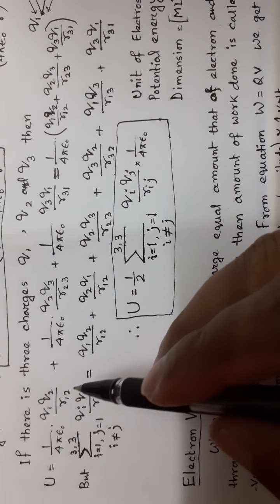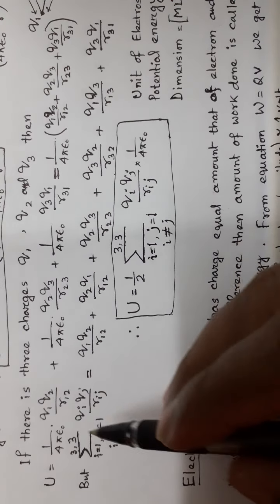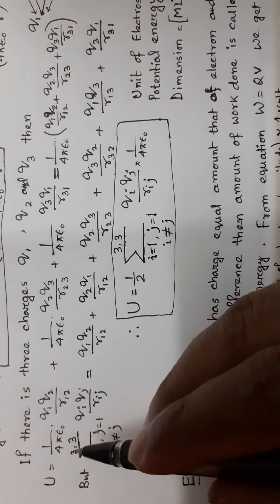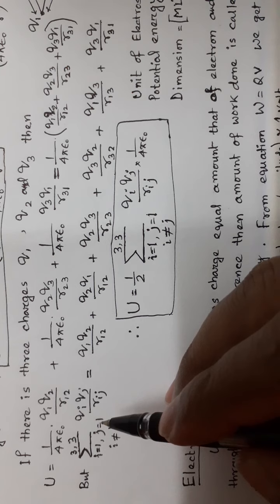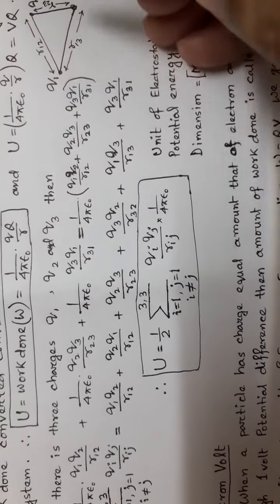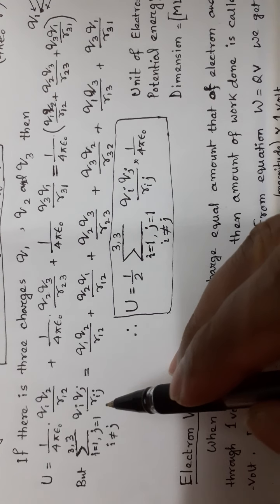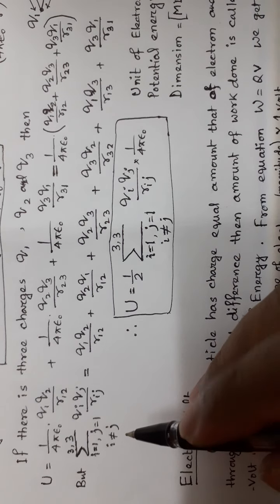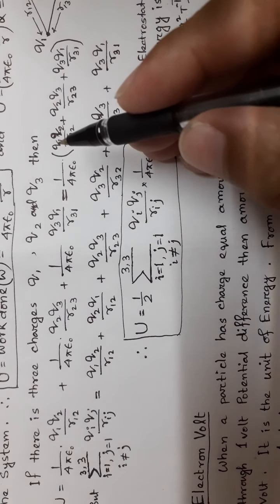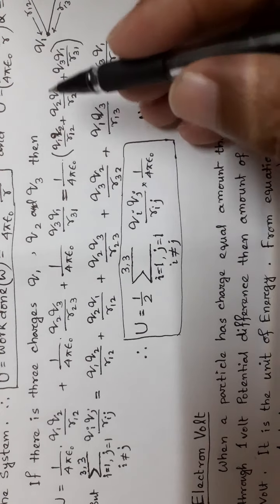This is written as a summation term. With i equal to 1 and j equal to 1 for a 3-particle system. When i equals j, it represents the same charge, so we do not include that product. The potential energy for different pairs is distinct.